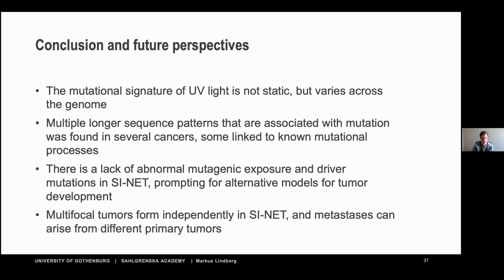To summarize: in SINET, there are very few mutations, and the conventional model of mutational processes leading to new phenotypes doesn't seem to apply in the same way, at least not for single nucleotide variants. There is considerable chromosome 18 loss, which may have driving capacity. Tumors evolve completely independently from each other without a shared genetic ancestor, and metastasis forms rather easily — sometimes from different primary tumors in the same patient. Overall, I showed how the UV mutational signature varies across the genome, explored longer sequence patterns in melanoma and other cancer types, and described the unique genomic landscape of SINET. Thank you very much for listening.